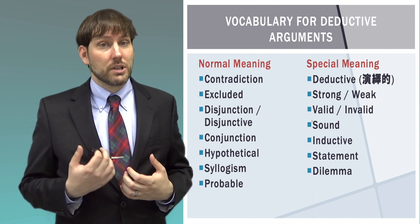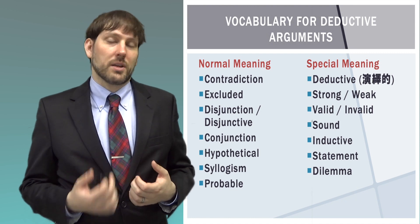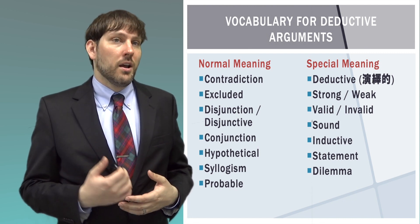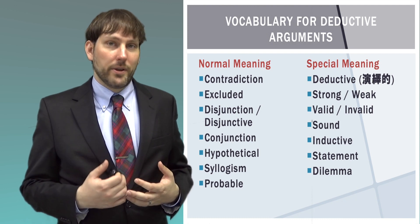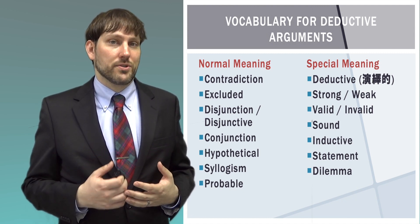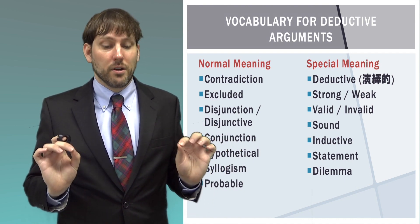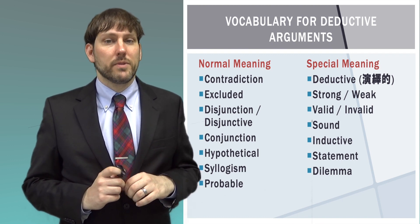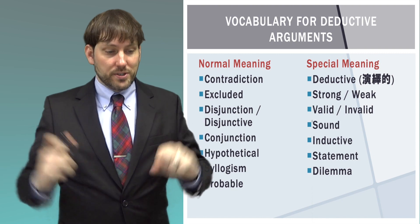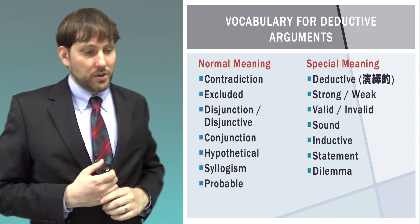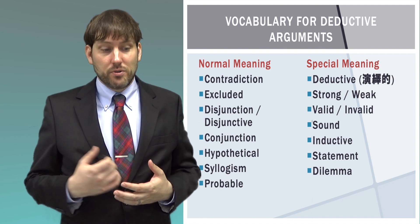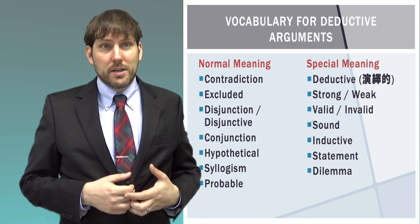Some other words have a special meaning. Deductive has the meaning 'enekiteki.' Strong and weak in arguments refers to how likely they are to convince you the conclusion is true. Valid — 'datto,' not 'yuko' — has the special meaning that in a valid deductive argument, if the premises are true, the conclusion must be true. Invalid means a deductive argument lacks this property. Sound is when an argument is valid and has all true premises. Inductive is kind of the opposite of deductive, meaning 'kinoteki.' A statement is something that is either true or false — 'meidae' in Japanese. A dilemma is a special type of argument.